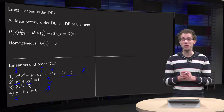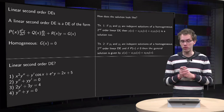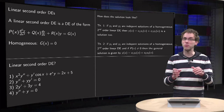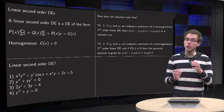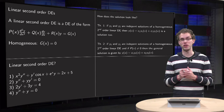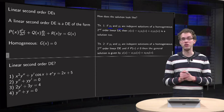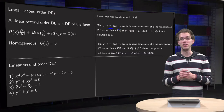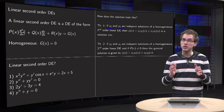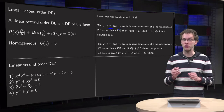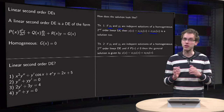We know how to recognize a second order linear differential equation, but how does the solution look? For that we have two theorems. Suppose you have a homogeneous differential equation — right hand side equals 0 — and suppose you find y₁ and y₂, two independent solutions. Independent in the linear algebra sense means, for two functions, that they are not a scalar multiple of each other. Then c₁y₁ + c₂y₂ is also a solution of the differential equation. That is Theorem 1.